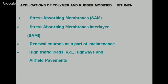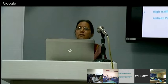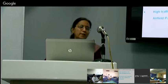Polymer and rubber modified binders cannot be used everywhere — for general city roads, their initial high cost is not justified. Special applications include stress-absorbing membranes, stress-absorbing membrane interlayers, renewal courses for maintenance, high traffic load highways and airfield pavements, and special locations like roundabouts, bus stops, and intersections.